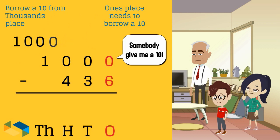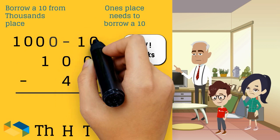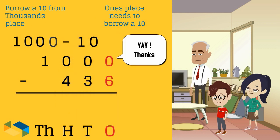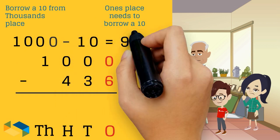The 1000 at the thousands place gives away a 10. It is reduced to 990.